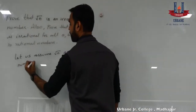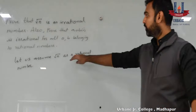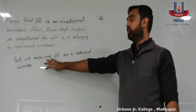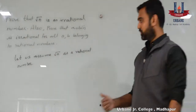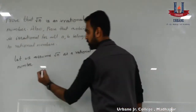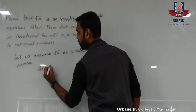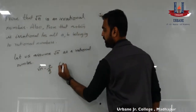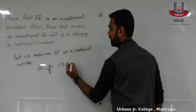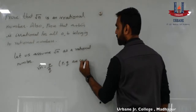What is a rational number? A number in the form of p by q, where p and q are integers such that q is not equal to 0. So, I am assuming square root of n is equal to p by q. The condition here is p and q are co-primes.